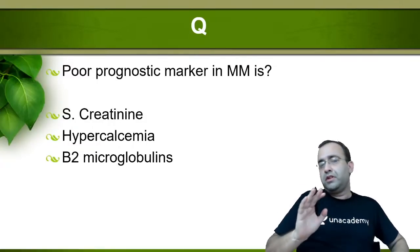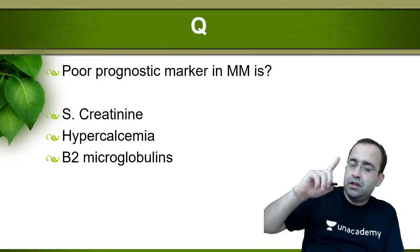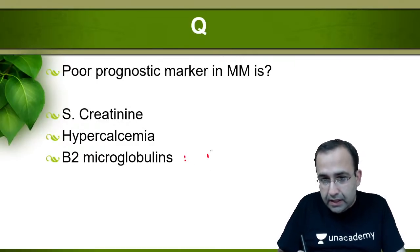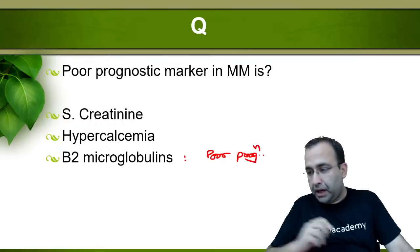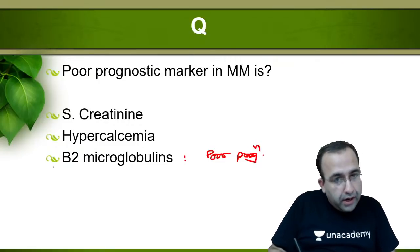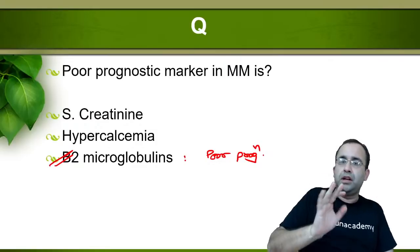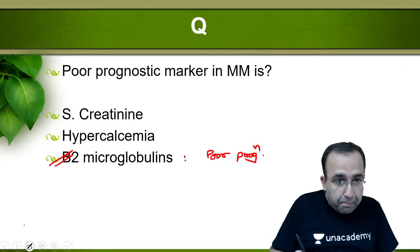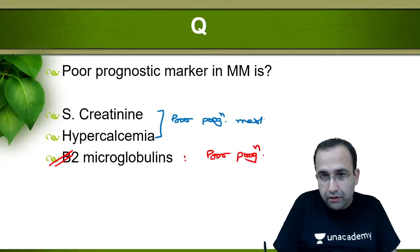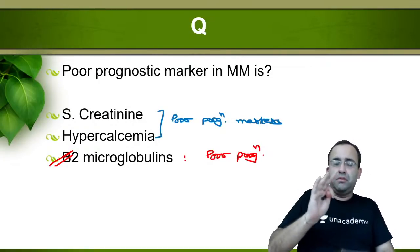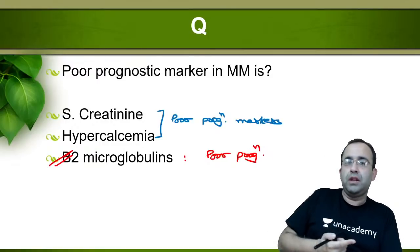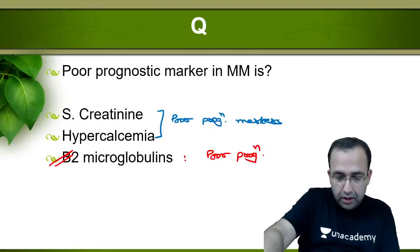Next question: poor prognostic marker in multiple myeloma. Beta-2 microglobulin increased levels are associated with poor prognosis. All three options were poor prognostic markers — hypercalcemia, renal failure, and beta-2 microglobulin — but the most significant poor prognostic marker in multiple myeloma is beta-2 microglobulin. Answer: option 3.